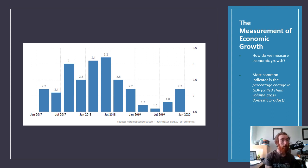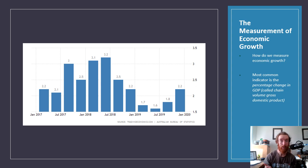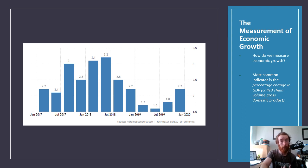The most common measure of economic growth is called change in GDP, which stands for Gross Domestic Product. Most often we look at real GDP, which means they've taken away the effects of inflation — the effects of increasing prices. We do this because it gives us a more accurate indication of whether we are actually producing more goods and services overall, rather than just seeing higher values due to rising prices.